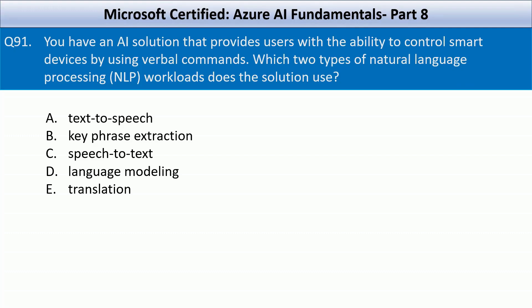This AI solution processes verbal commands to control smart devices, which involves converting spoken input into actionable text and understanding its meaning. Speech to text converts spoken language into text and language modeling helps understand the structure and meaning of the transcribed text.